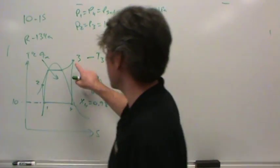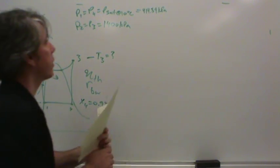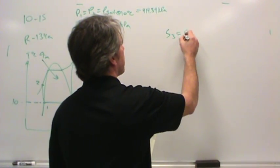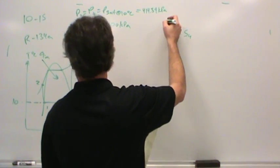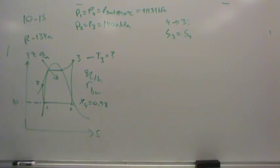Now we'd like to find the temperature at state three. We don't know how much heat is transferred in. What else could we do? Is there another state besides one where we know all the information? We know four, don't we? Couldn't we move from state four to state three? What would be the relationship between four and three? It's isentropic. There's an isentropic relationship. S3 is equal to S4. So let's move from state four to state three with this idea that the entropies are the same. What is the entropy in state four?